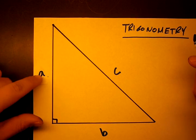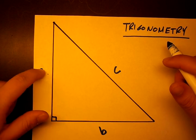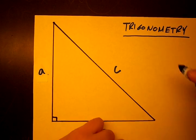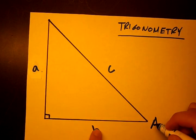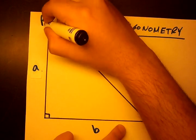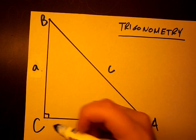Then we label the angle opposite a. So this angle, uppercase A. The angle opposite b is uppercase B, and the angle opposite c is uppercase C.